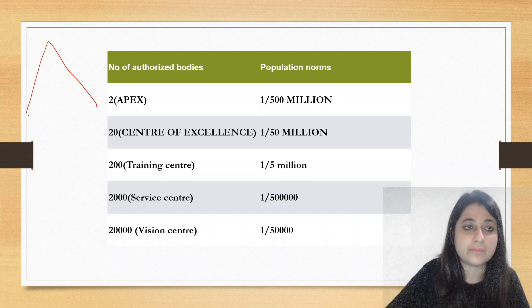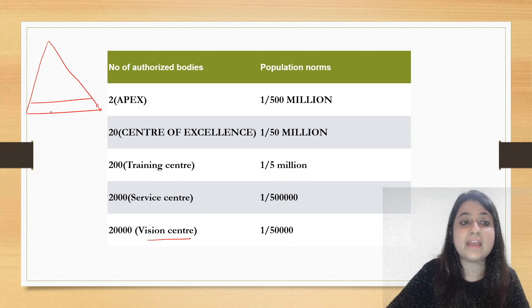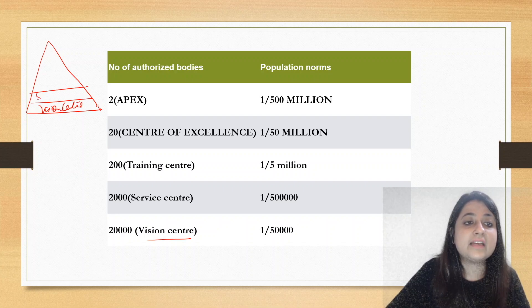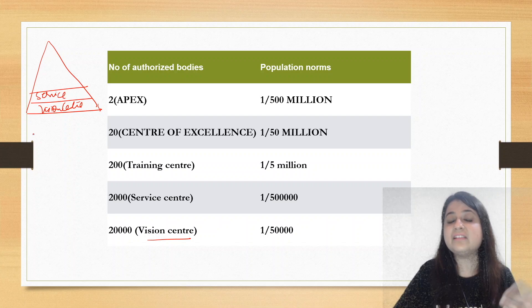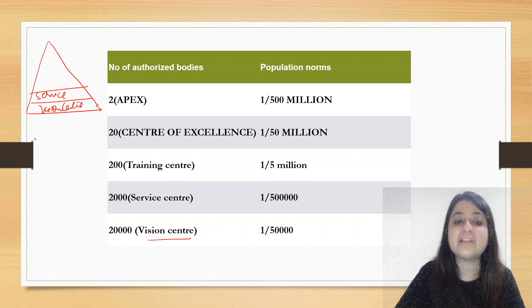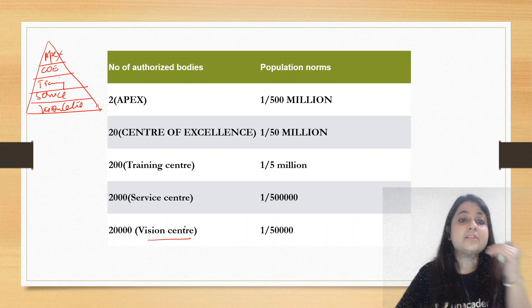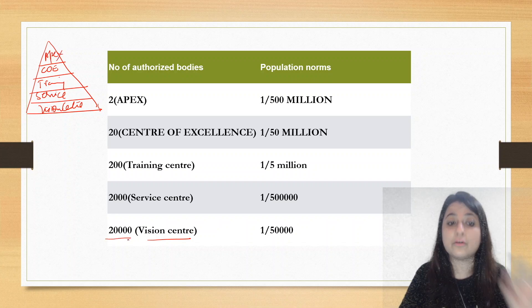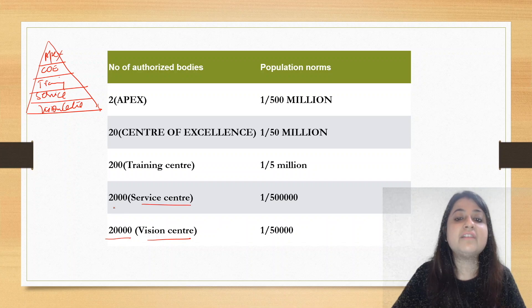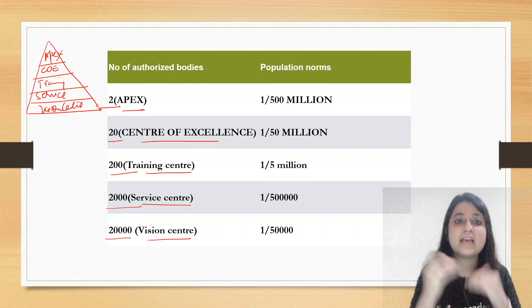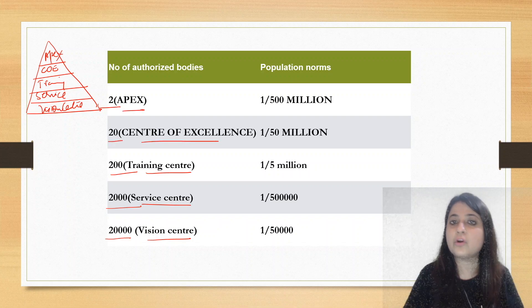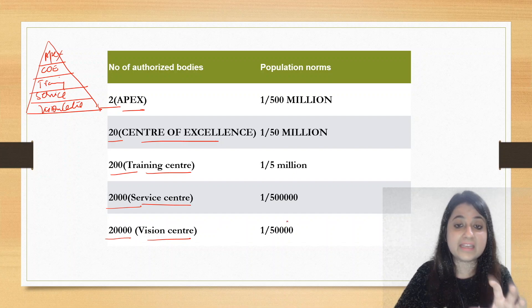Next, what is the structure of Vision 2020? Looking at this pyramid: at the bottom are Vision Centers, above that are Service Centers, then Training Centers, then Centers of Excellence, and at the top are Apex Institutes. Vision Centers number 20,000; Service Centers 2,000; Training Centers 200; Centers of Excellence 20; and Apex Institutes 2.